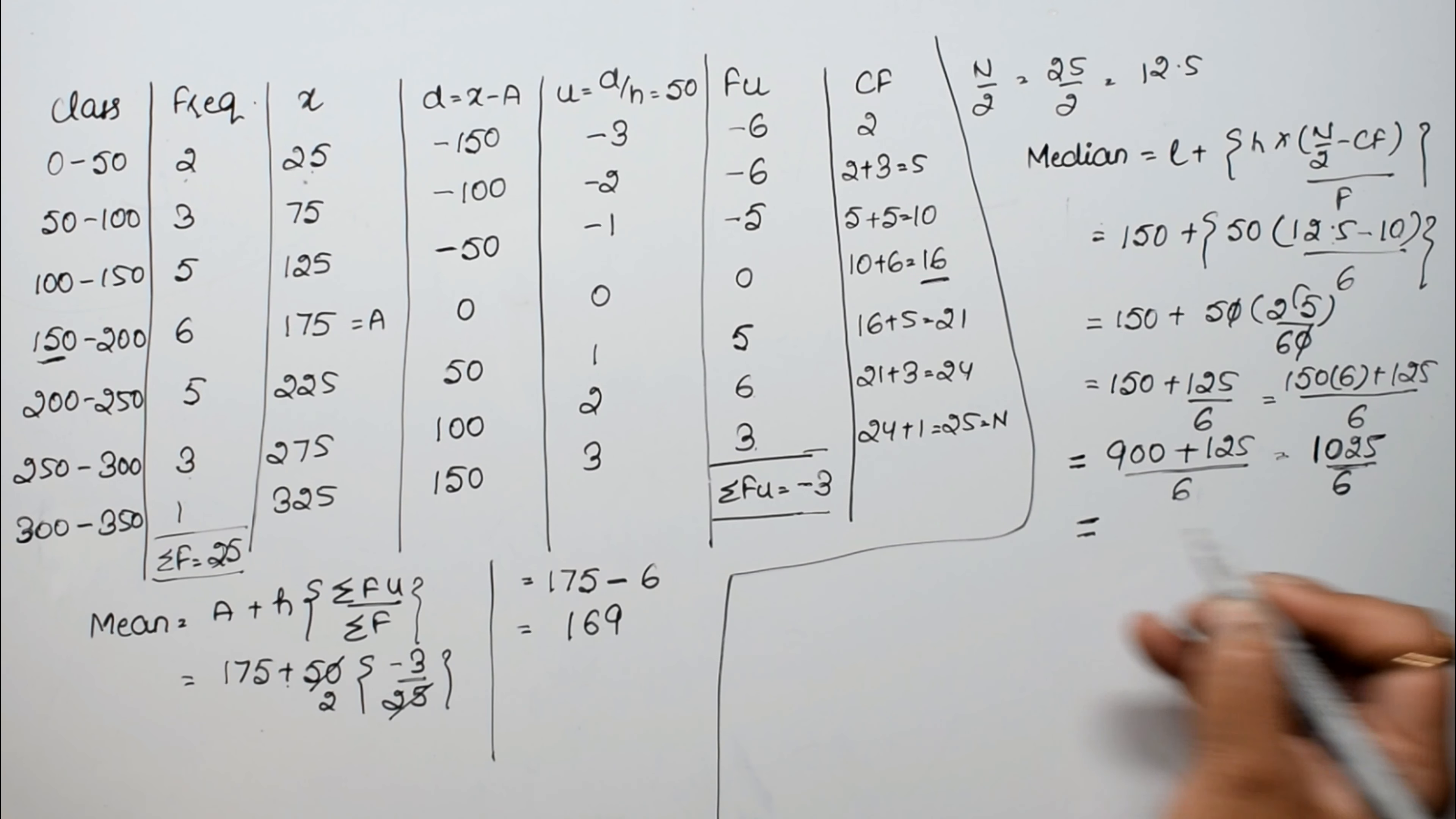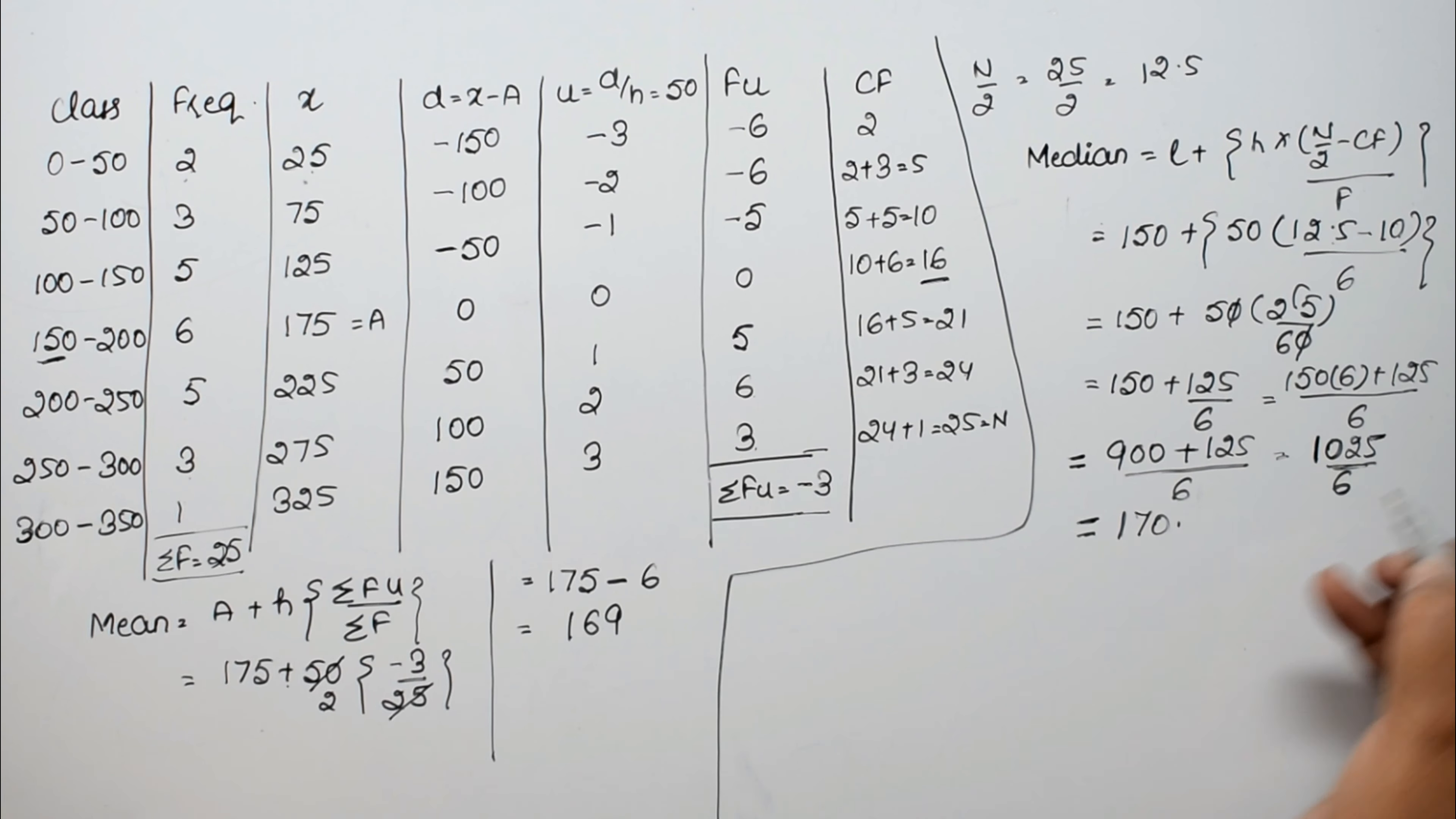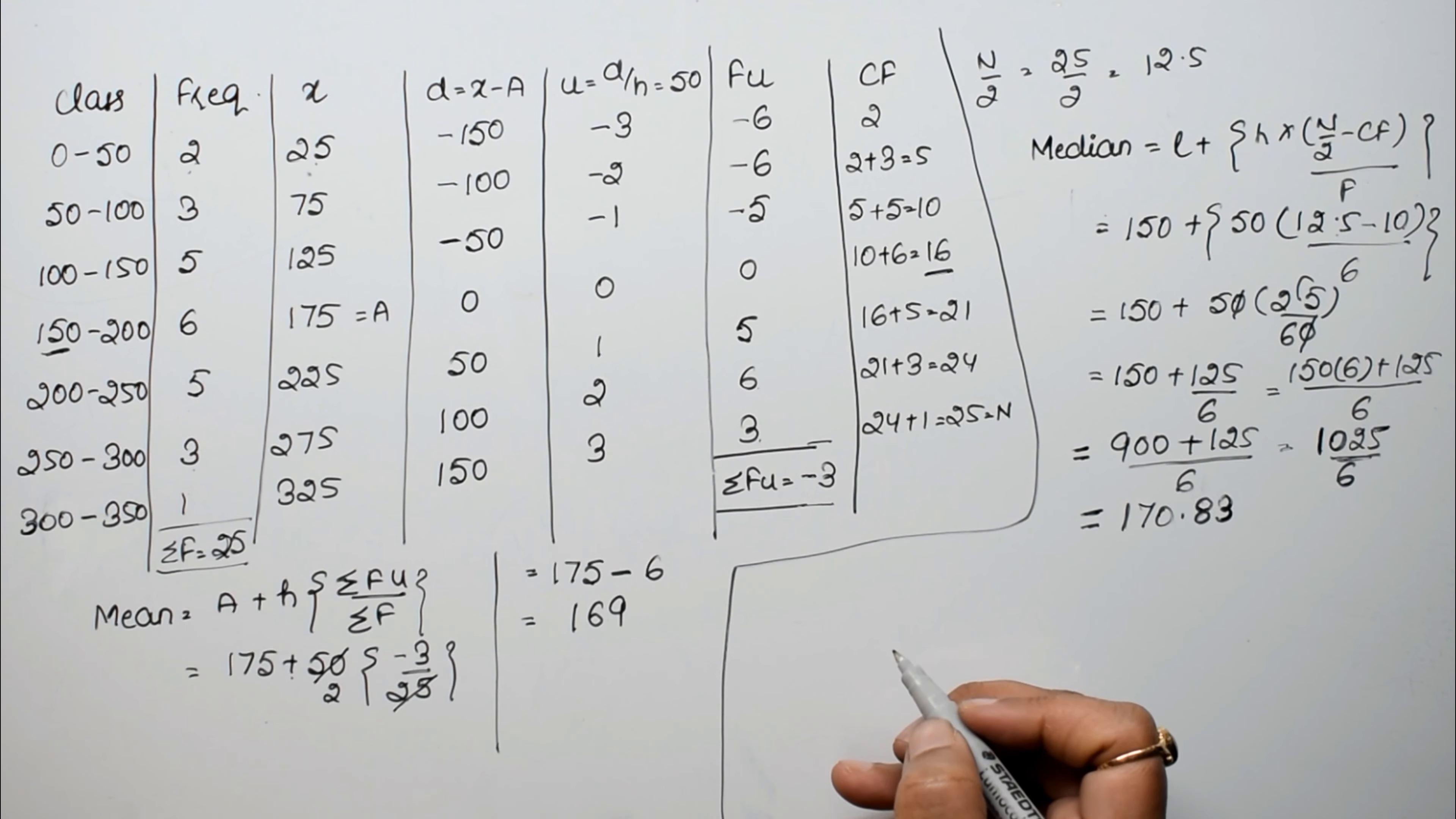So dividing by 6, 6 ones are 6, 42, 6 sevens are 42, 0, point, 50, 6 eights are 48, right, 20, 6 threes are 18. It came, see then 23 came, so not more than 5, we'll leave this, right?